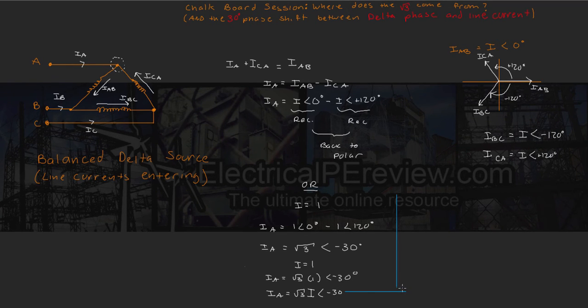Now, let's find the rest of our line current phase angles. If we found Ia equal square root three I minus 30 degrees, and this is a balanced positive A, B, C sequence, that means Ib will have the same magnitude as Ia, but this time it's going to be at a phase angle of Ia minus 120 degrees. So negative 30 minus 120 degrees gives us negative 150. And Ic is going to also have the same magnitude at a phase angle of Ia phase angle plus 120 degrees. So negative 30 plus 120 degrees gives us 90.